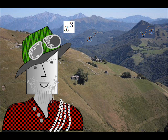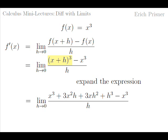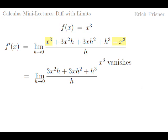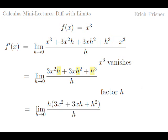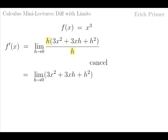Our third example, f(x)=x³, is done quite similarly to the square function — we just need a little more effort when expanding. We start with the definition of the derivative, then plug in the definition of f. We expand (x+h)³ and get x³ + 3x²h + 3xh² + h³ by foiling twice. Note that x³ vanishes, and the numerator 3x²h + 3xh² + h³ has a common factor of h. We factor out h, cancel it, and get the limit of 3x² + 3xh + h² as h approaches zero. Both 3xh and h² approach zero, so we just get 3x².